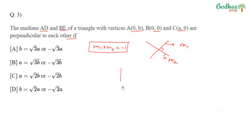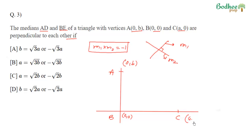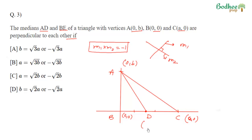Let's draw the scenario. Point B is at the origin, point A is at (0, B), and point C is at (A, 0) — this is a right-angle triangle. For median AD, D is the midpoint of BC. The coordinates of D are (A/2, 0), found by adding the x-coordinates and dividing by 2, and similarly for the y-coordinates.